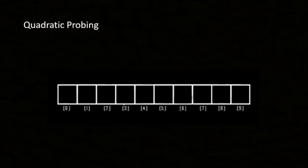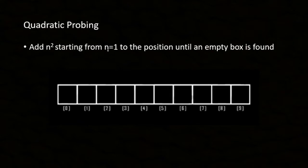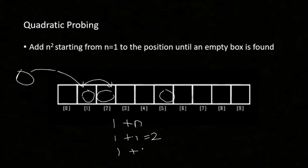There's another trick called quadratic probing. It's very similar to linear probing, however the difference is what you want to increment. You add n squared starting from n equals 1 to the position until an empty box is found. I have data already here and want to enter data at position 1, but it's occupied. So we plus 1 squared which equals 2, but it's occupied again. Then 2 squared equals 5.